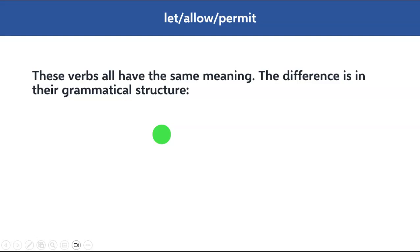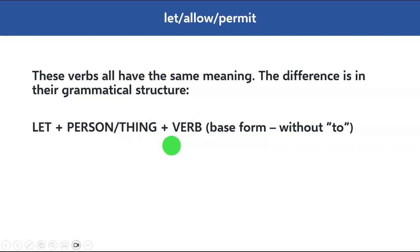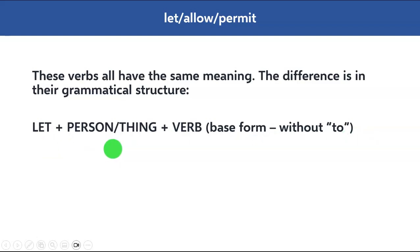Let's understand how to use 'let' first. Whenever you use 'let' in a sentence, you use it like this: let + person or thing + verb. The verb has to be the base form of the verb — V1 — without the word 'to'. So: let + person or thing + base form of the verb, without the word 'to'.